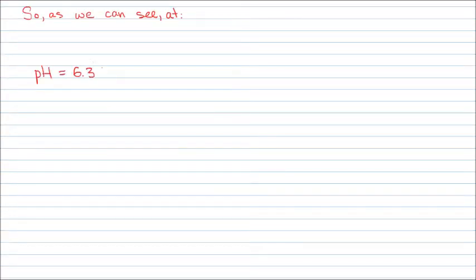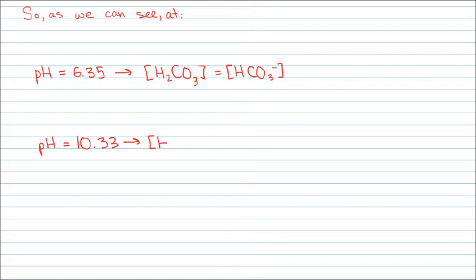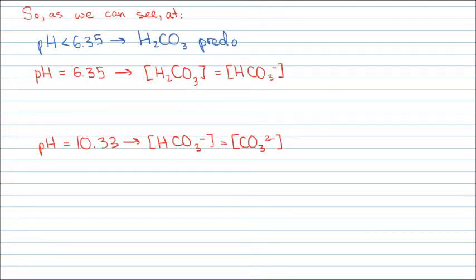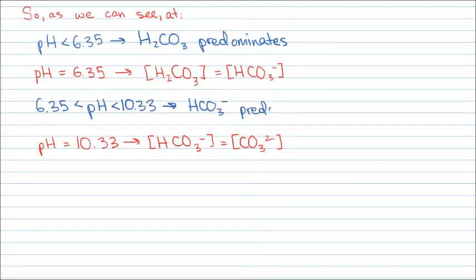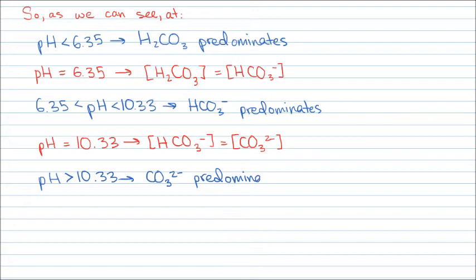At a pH of 6.35, the concentrations of carbonic acid and bicarbonate are equal. And at a pH of 10.33, the concentrations of bicarbonate and carbonate are equal. At pH values below 6.35, carbonic acid is the dominant species. At pH values between 6.35 and 10.33, bicarbonate is the dominant species. And at pH values above 10.33, carbonate is the dominant species.